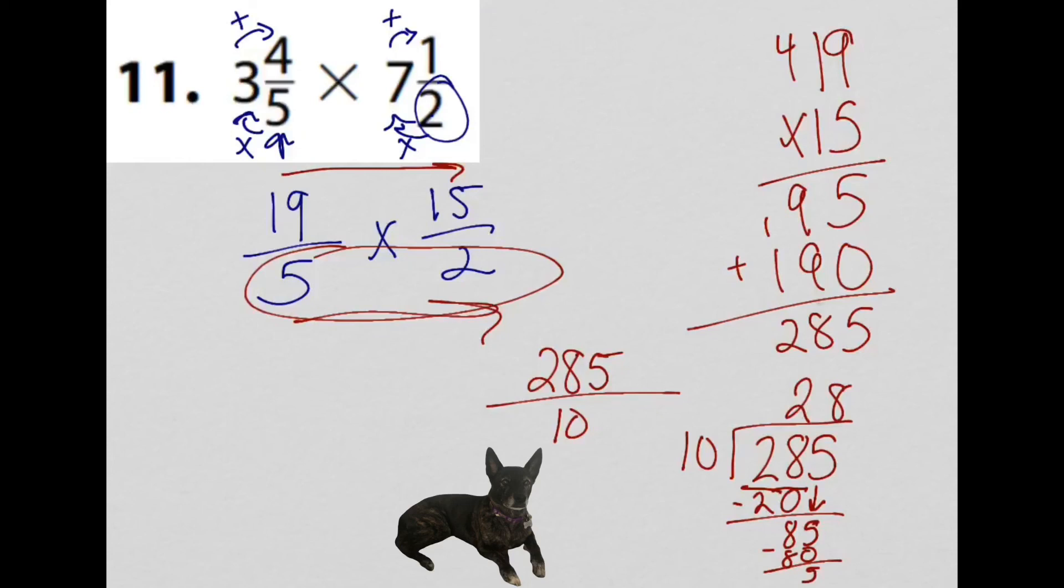So my final answer is going to be 28 as my whole number, and then that remainder is going to be the numerator, and I keep the same denominator that I had when I changed it into a fraction greater than 1, and that's 10. Again, I need to check, can I change 5 tenths into a fraction that has lower terms?